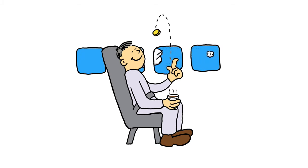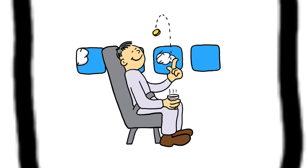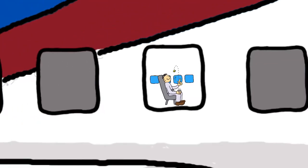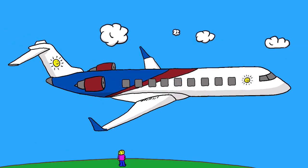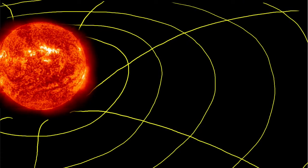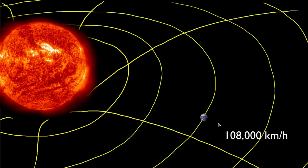There you are on an airplane, drinking a cup of coffee. You're at rest relative to the airplane, but you're moving 700 kilometers per hour relative to the surface of Earth. Relative to the sun, you're moving in orbit at a speed of about 108,000 kilometers per hour.